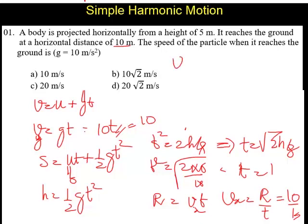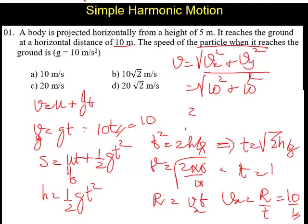v is equal to square root of vx square plus vy square. It is the square root of 10 square plus 10 square, so it is going to be root of 200. It is 10 root 2. The correct answer is 10 root 2 meters per second.